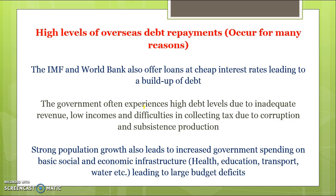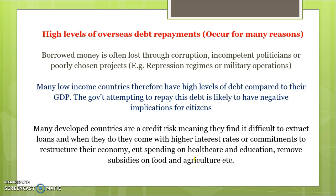Strong population growth leads to increased spending on infrastructure, health, education, and transport, and governments often run large budget deficits where expenditure exceeds revenue. Borrowed money is often lost through corruption, incompetent politicians, or poorly chosen projects. Many low-income countries therefore find that they have high levels of debt compared to their GDP, and the government trying to repay this debt means they often have to take money away from other areas.